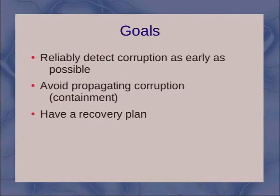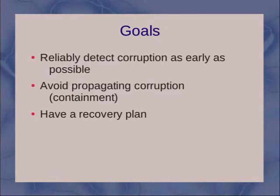Another downside to relying on the file system for corruption detection is that I don't know of any file system that does that detection in memory cache. So if you end up with an error introduced through your memory into the file system cache, you'll never know it. The file systems also don't check the in-memory cache, which leaves an additional vulnerability. Often that memory cache is very large, so there is a greater chance of some error happening there. If you have very rare memory problems, that could be a problem that it might not otherwise be when using file systems to detect corruption.